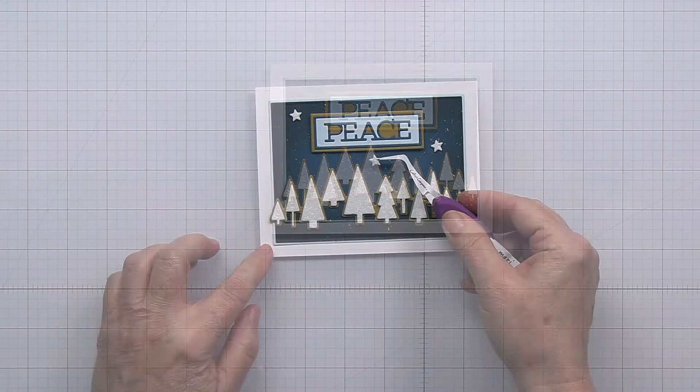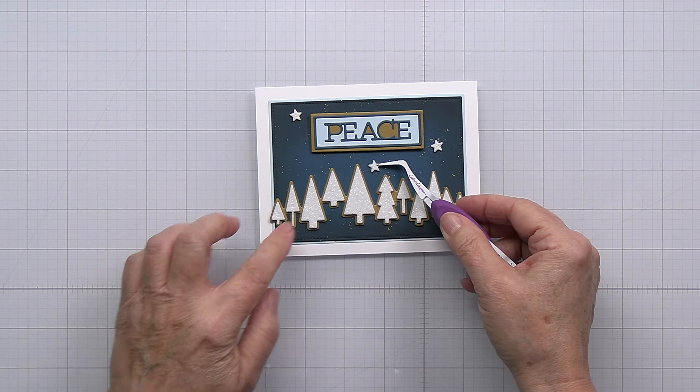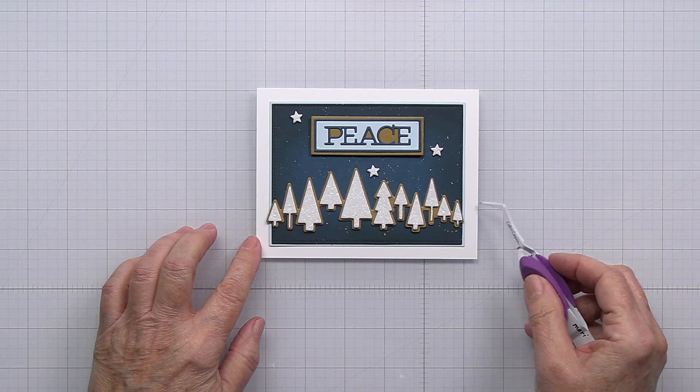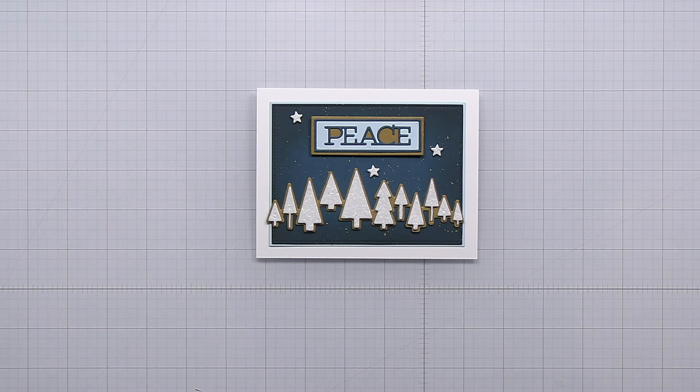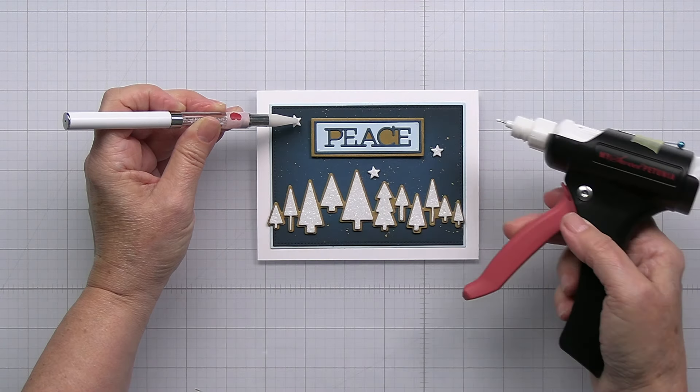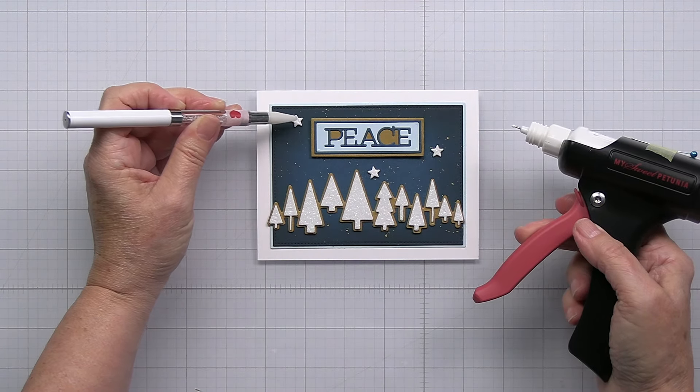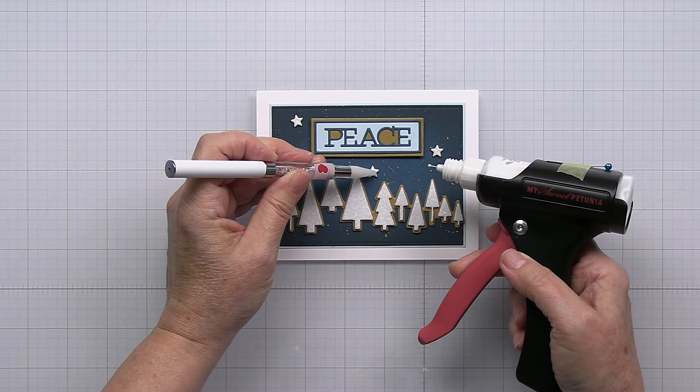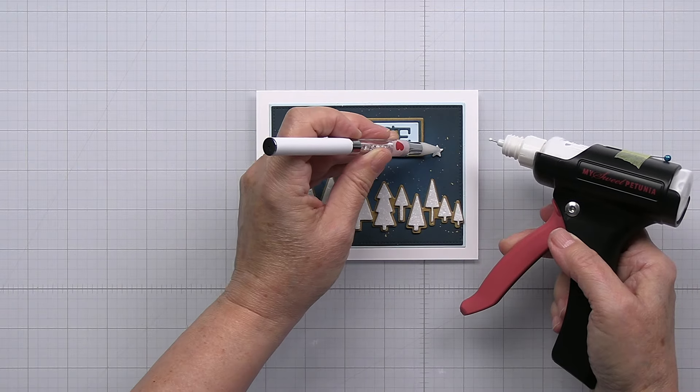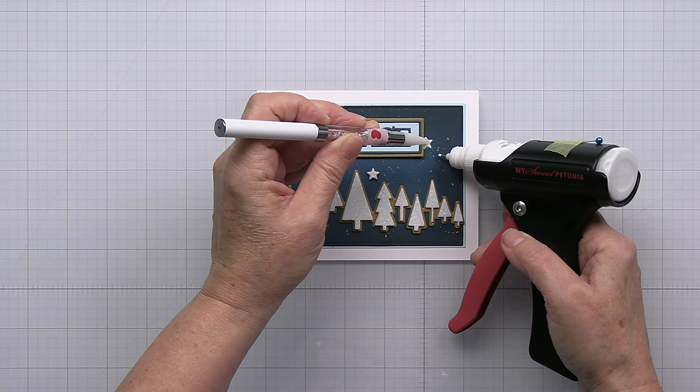I die cut out three little stars using that Merry Greetings die set and I've cut those again from that Spellbinders white glitter foam and those are just nice and dimensional in that way I love that glitter foam and it comes in lots of different colors too it die cuts very beautifully and I love these little stars so I'm going to put those onto my project as well and then that is going to finish off my project friends.